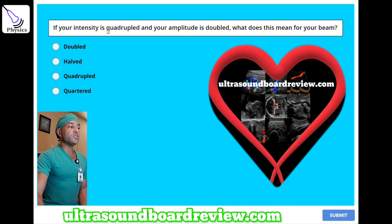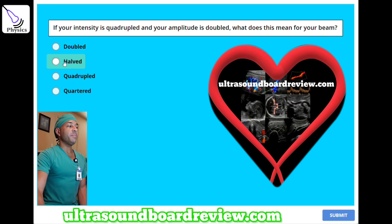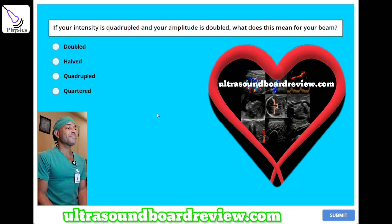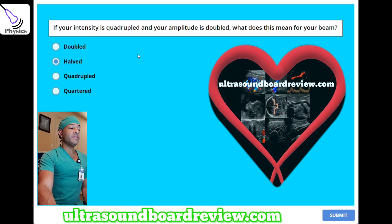If your intensity is quadrupled and your amplitude is doubled, what does this mean for your beam? A, doubled. B, halved. C, quadrupled. Or D, quartered. The answer is B — halved.